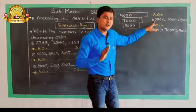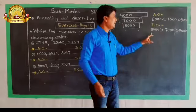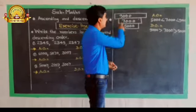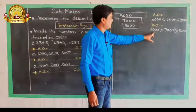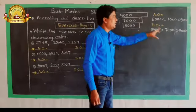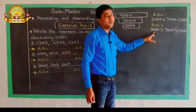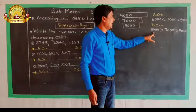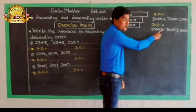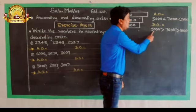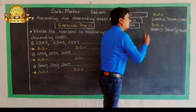In descending order, we start from the biggest number. So the first position is 9,000, which is the biggest number. Then 7,000, and 7,000 is bigger than 5,000. So descending order means you must write the largest number first — 9,000, then 7,000, then 5,000.